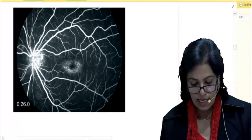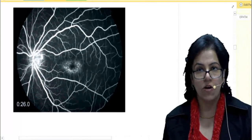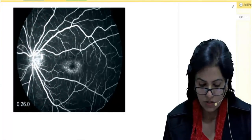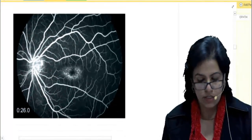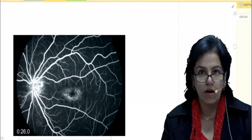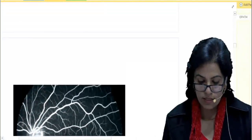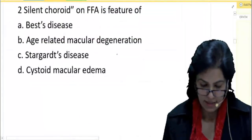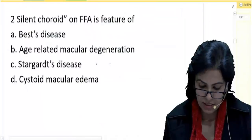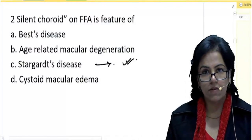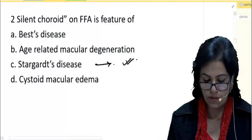Why it is happening? This is happening due to deposition of lipofuscin pigments. Due to the deposition of the lipofuscin, it blocks the fluorescence of the choroid and this is a feature of Stargardt's disease. Deposition of lipofuscin is blocking the fluorescence.